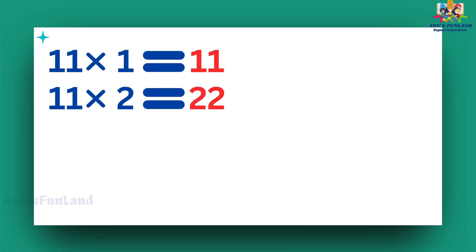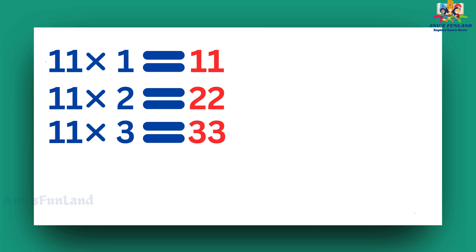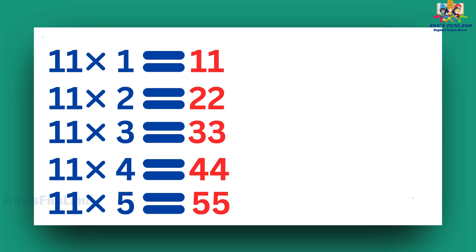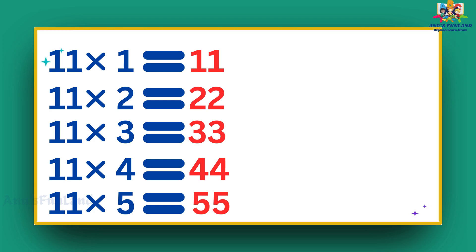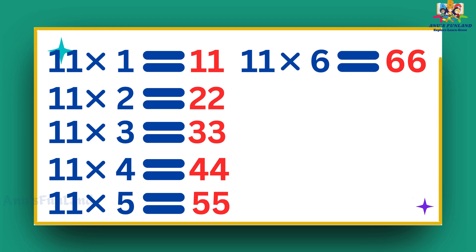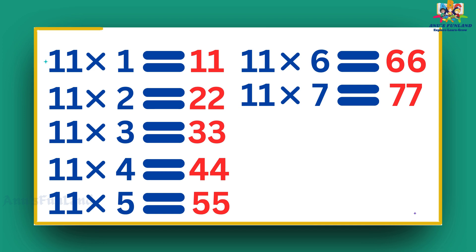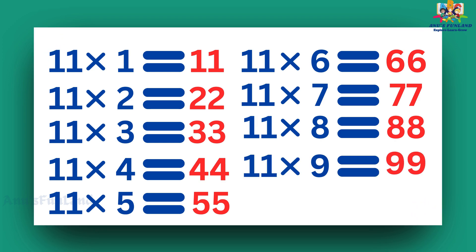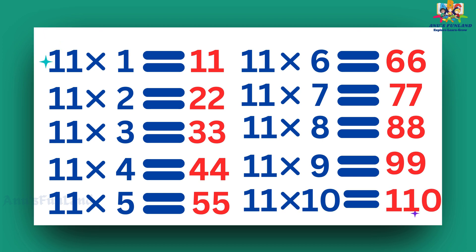11 ones are 11. 11 twos are 22. 11 threes are 33. 11 fours are 44. 11 fives are 55. 11 sixes are 66. 11 sevens are 77. 11 eights are 88. 11 nines are 99. 11 tens are 110.